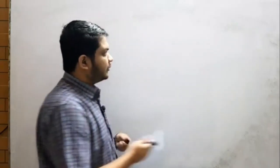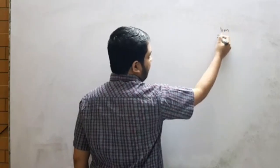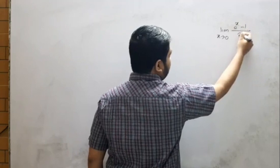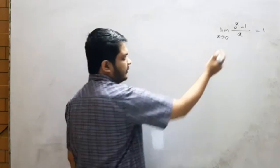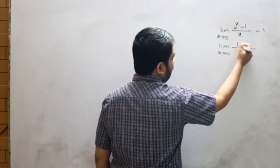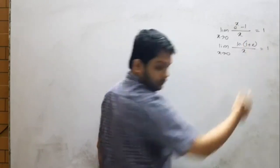I will write the first step. The limit as x tends to 0 of (e^x - 1) divided by x is equal to 1. As for the next step, the limit tends to 0 is equal to 1.